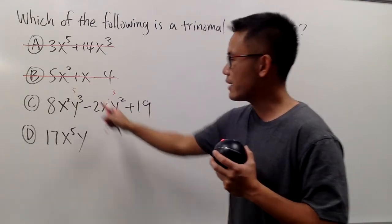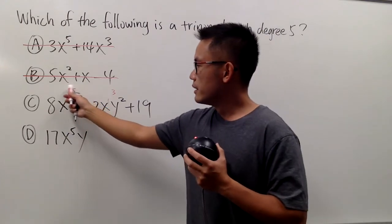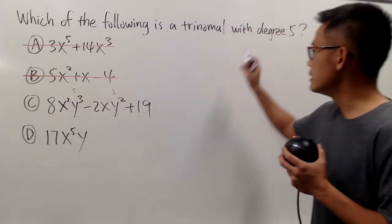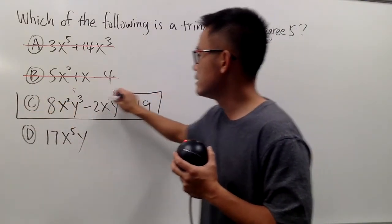So the highest power right here is 5. Highest combined exponent is 5, even though this right here is just 3. Therefore, this is with degree 5, and it has 1, 2, 3 terms, so it's a trinomial with degree 5. C is the answer.